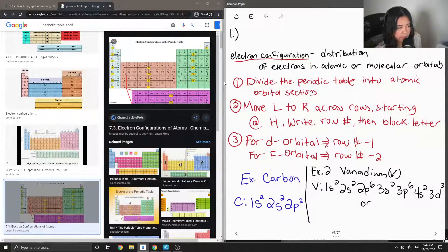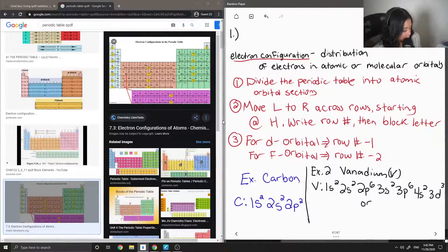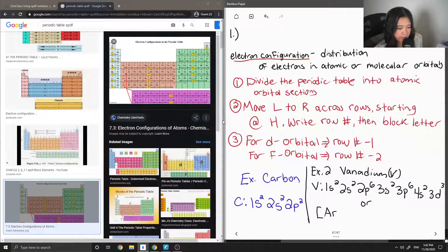So we can also write the electron configuration in the shorthand way. So to do this, we are going to find the noble gas that comes right before vanadium if you go in order. So before vanadium is argon. So to write the shorthand way, I'm going to do argon in square brackets. And then you just continue on with the same rule. So argon, 4s2, 3d3.